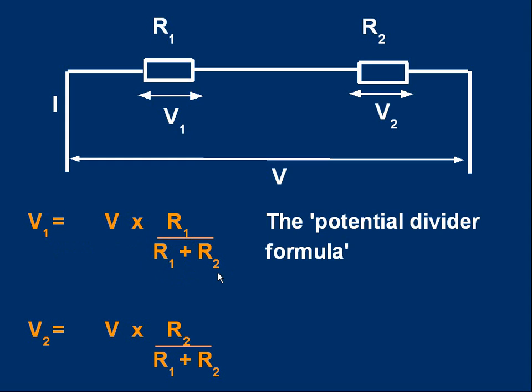Similarly, if you wanted V2, it's the full voltage V times R2 over R1 plus R2. That's the potential divider formula. Very useful.